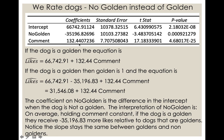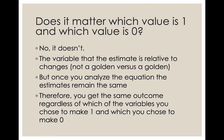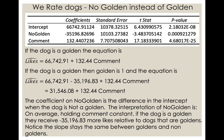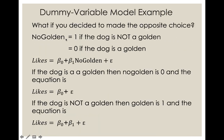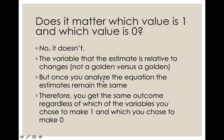It doesn't matter which value is one and which is zero. The variable that the estimate is relative to changes — no-golden is relative to being a golden, whereas golden is relative to not being a golden — but once you analyze the equation, the estimates remain the same. You get the same intercepts and the same slope of 132.44 regardless of which variable you choose to make a one and which a zero.